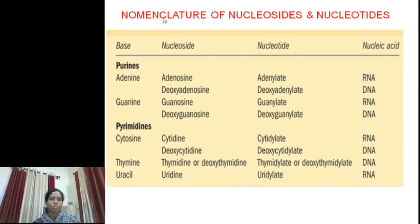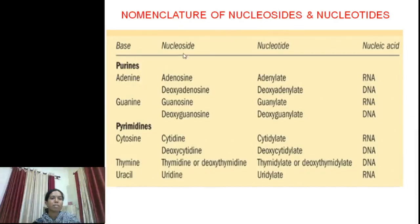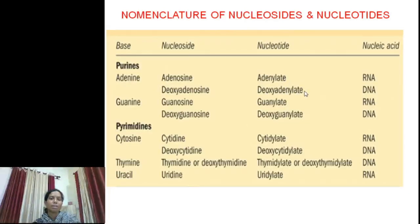This table shows the nomenclature of nucleosides and nucleotides. In the case of RNA, if adenine is the nitrogen base, then that nucleoside is adenosine. In the case of DNA, if adenine is present in the nucleoside, then it is deoxyadenosine. For a nucleotide, if adenine is present in the nucleotide of RNA, then it is adenylate, and if adenine is present in the nucleotide of DNA, it is deoxyadenylate. The same naming applies for other nitrogen bases.